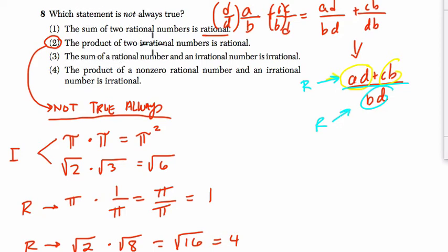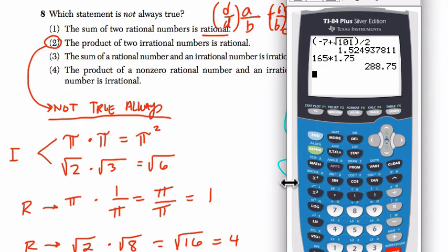Three. The sum of a rational number and an irrational number is irrational. That's always true. For example, if you take the square root of two, and you add it to three, this number is still irrational. Think about it.